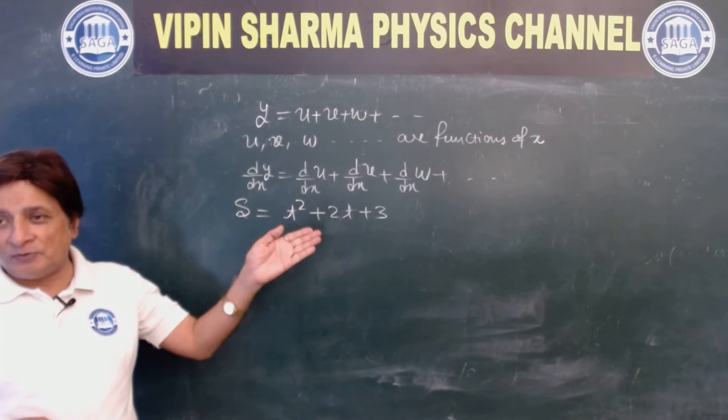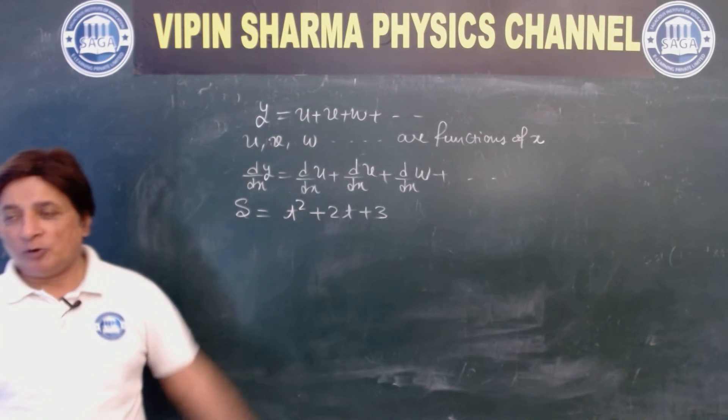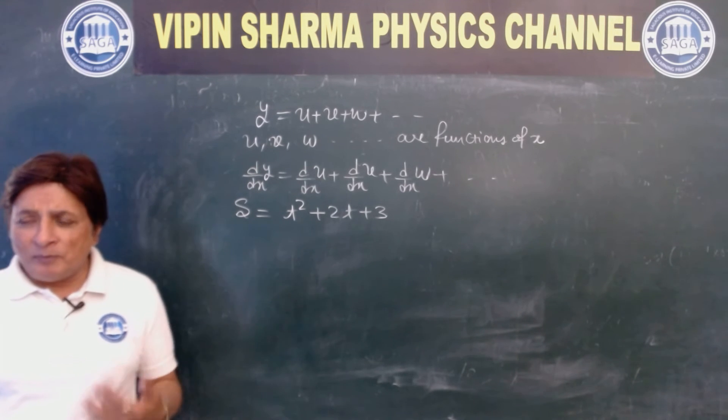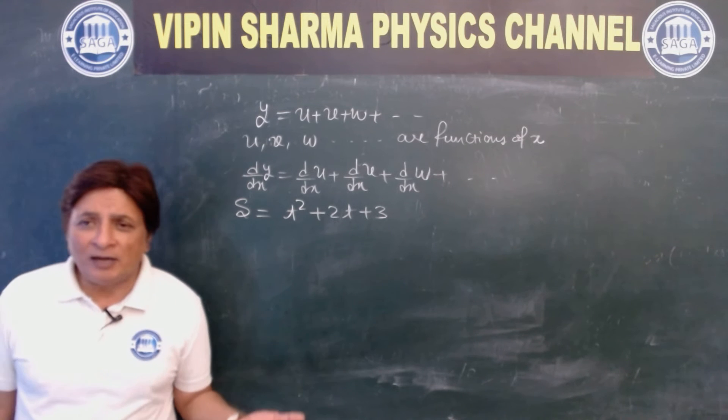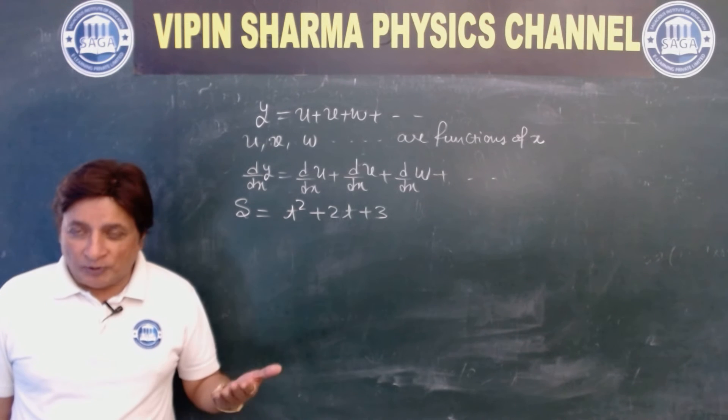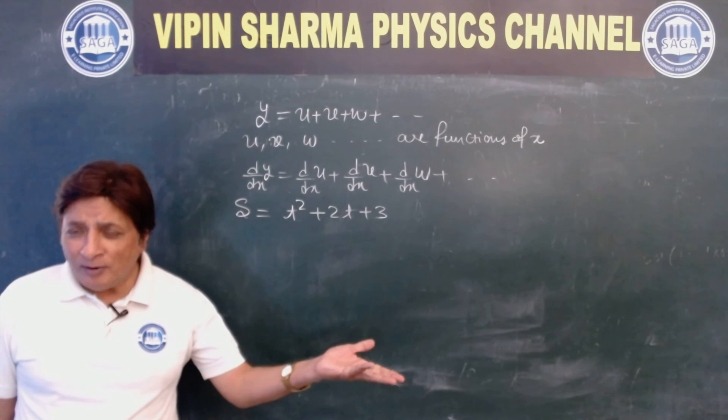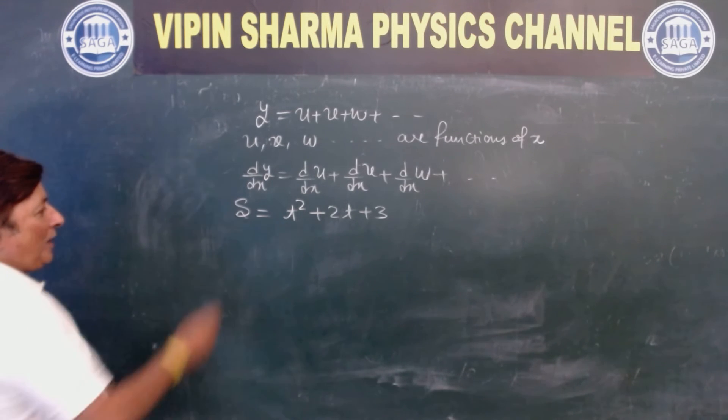t squared, 2t, 3 are like u, v, w. And I don't repeat. You know it's a technical era. I don't repeat. The reason is that you can rewind the video. That's it.